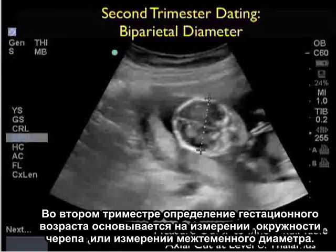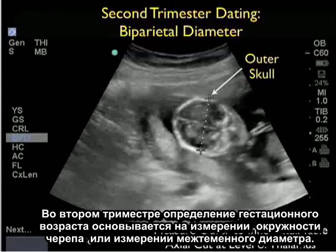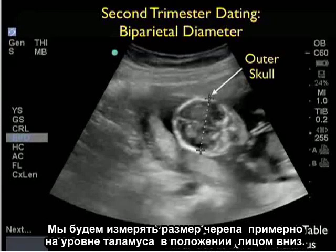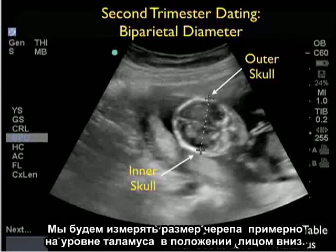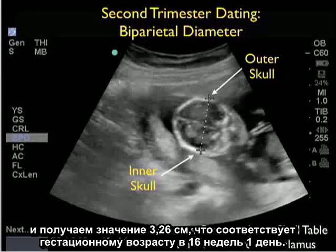In the second trimester, dating of gestational age focuses on skull circumference or measurement of the biparietal diameter. We want to measure the skull at about the level of the thalamus in an axial orientation with the face down. We're placing the calipers from the outer skull table proximally to the inner skull table distally, and we have a measurement of 3.26 centimeters correlating to a 16 week, 1 day gestational age.